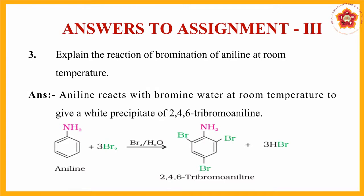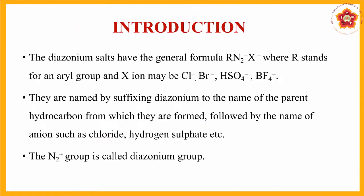The third question: explain the reaction of bromination of aniline at room temperature. Since the NH2 group is a highly activating and ortho-para directing electron-donating group, the possibilities of ortho and para substitution arise. Since it is highly activating, all positions with negative charge in resonance will be thoroughly substituted, and therefore you get 2,4,6-tribromoaniline.